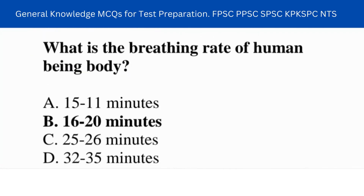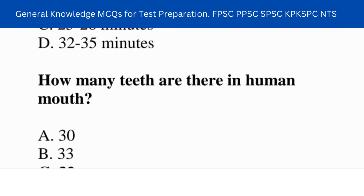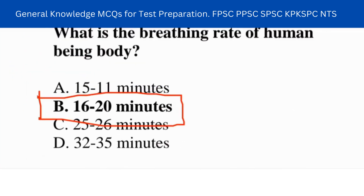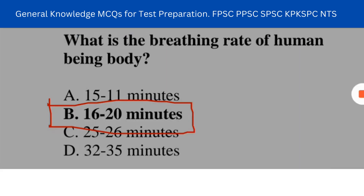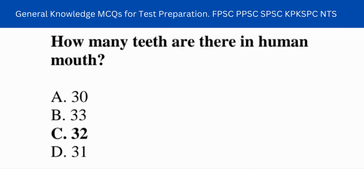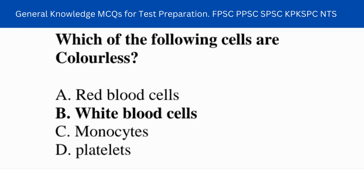Next question: what is the breathing rate of a human body? Answer: 16 to 20 per minute. How many teeth are there in the human mouth? Answer: 32. Next question: which of the following cells are colorless? Answer: white blood cells.